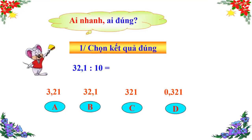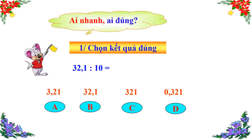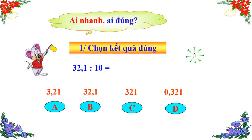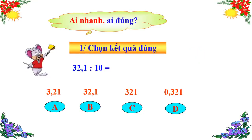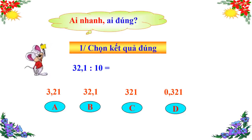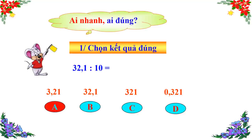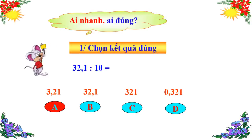Câu số 1: Chọn kết quả đúng. 32,1 chia 10 bằng bao nhiêu? A: 3,21 — B: 32,1 — C: 321 — D: 0,321. Câu trả lời chính xác là câu A: 3,21. Thầy chúc mừng tất cả những bạn chọn đúng đáp án A. Như vậy, để chia một số thập phân cho 10, ta chỉ việc dời dấu phẩy sang bên trái một chữ số là có ngay kết quả.